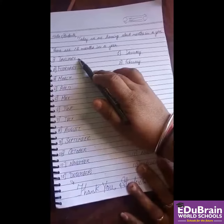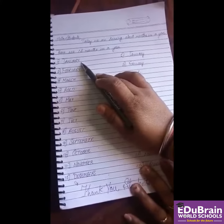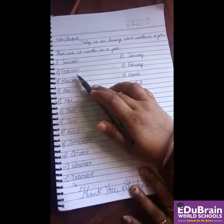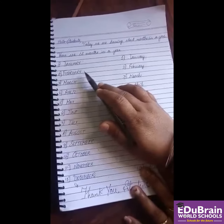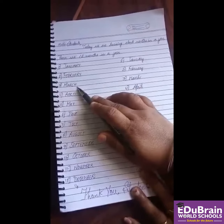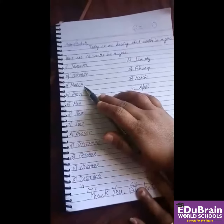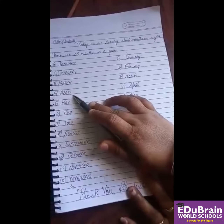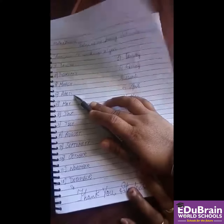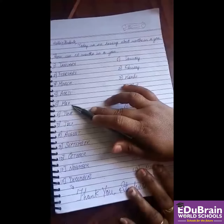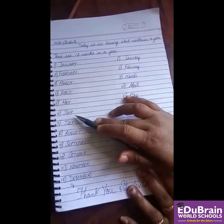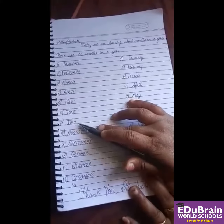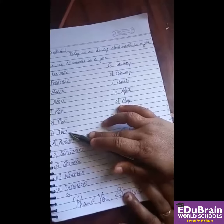January, J-A-N-U-A-R-Y, January. February, F-E-B-R-U-A-R-Y, February. March, M-A-R-C-H, March. April, A-P-R-I-L, April. May, May. June, J-U-N-E, June. July, J-U-L-Y, July.